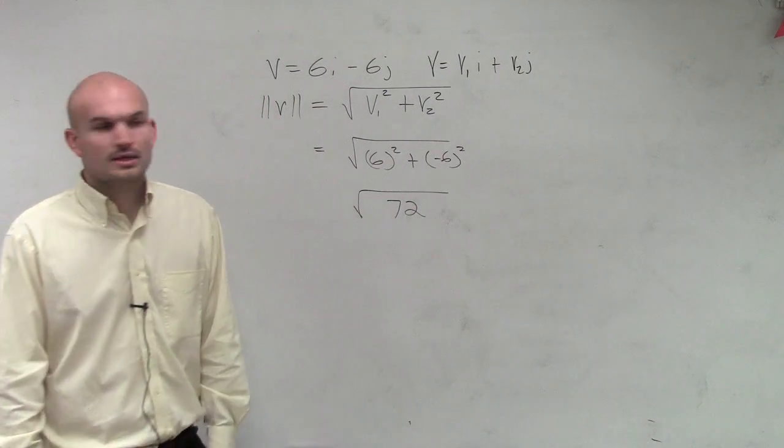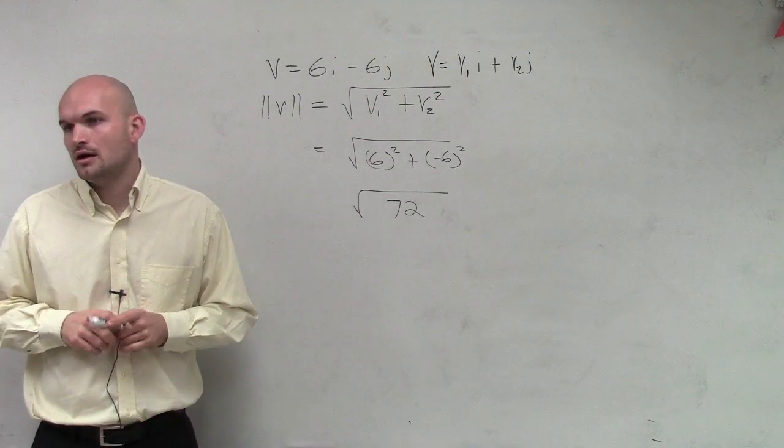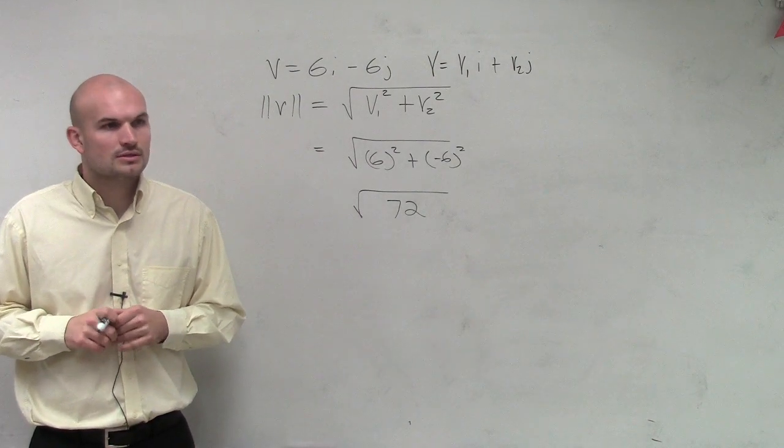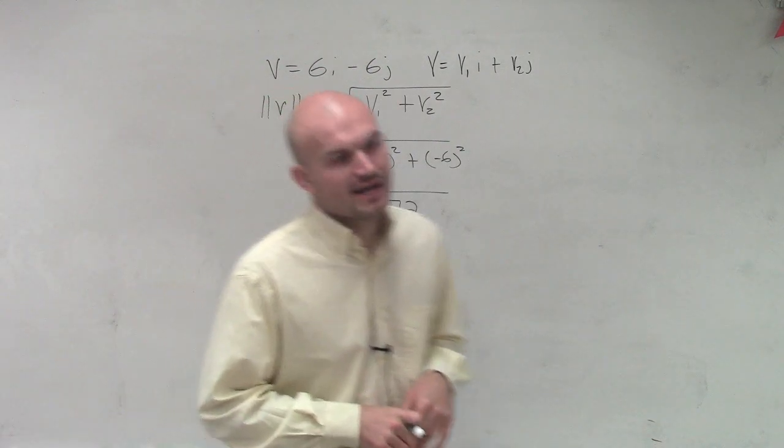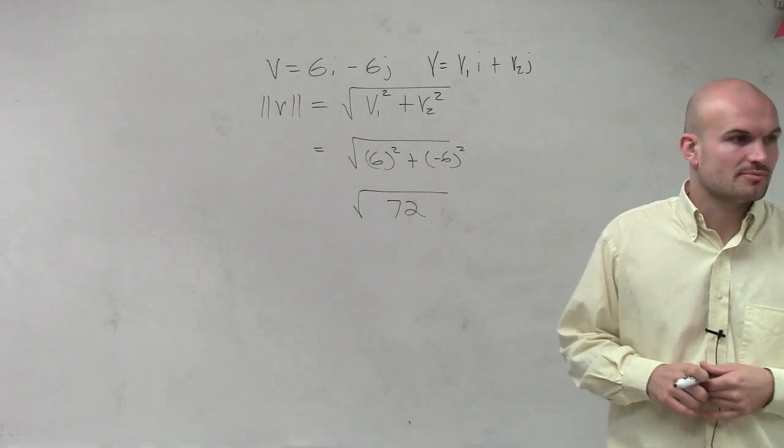And then I need to see, how can I simplify that any farther? So now I need to figure out, what is the largest square number that can divide into 72 that I can figure out to simplify?